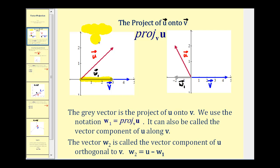We can also think of the projection as the vector component of u along v. Looking at the second diagram, if we had a light up here and projected vector u onto vector v, this light would produce a shadow in the opposite direction of vector v. Again, the projection would be this gray vector here, vector w sub one.